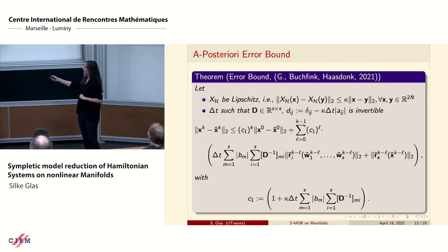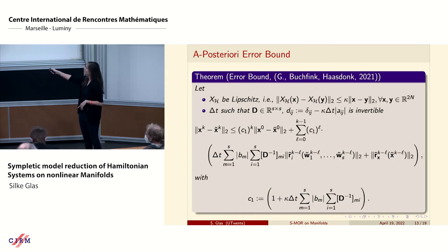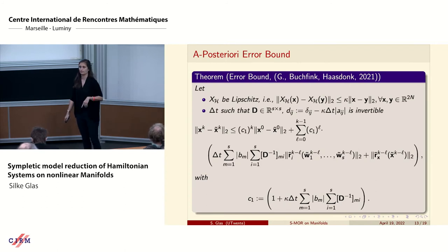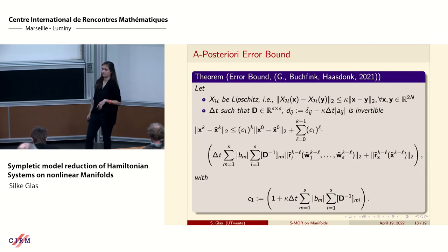We obtain an error estimator for each time step bounding the error from the full-order solution to the reconstructed solution. The initial state term vanishes when using exactly the initial condition described before, and then we have a term on the right-hand side depending on the residual, the state, and the velocity.